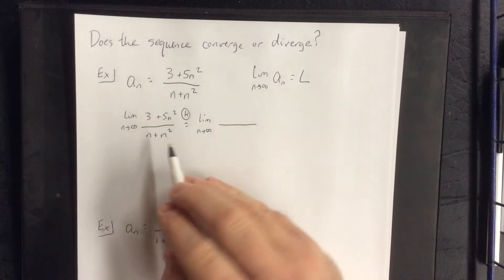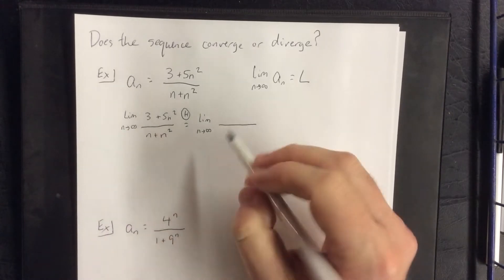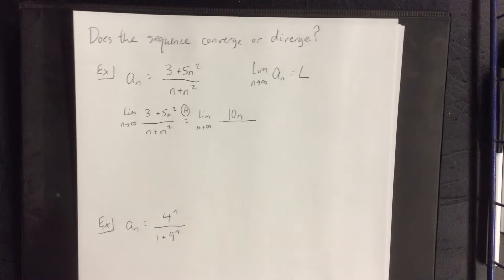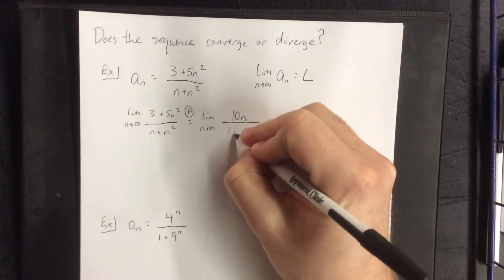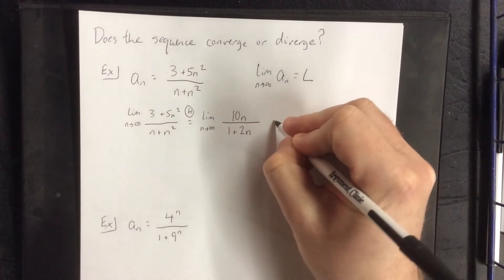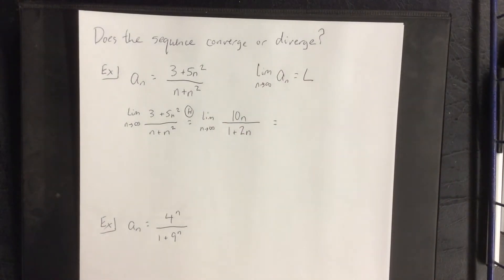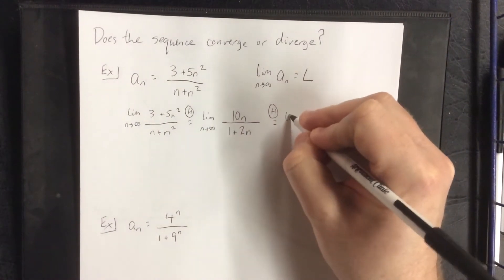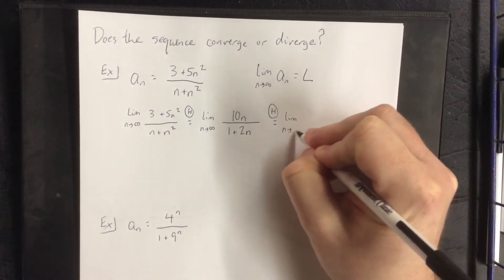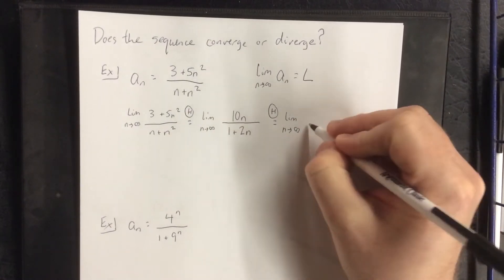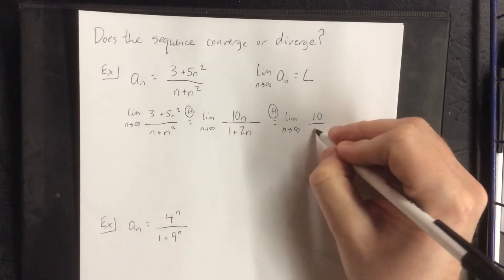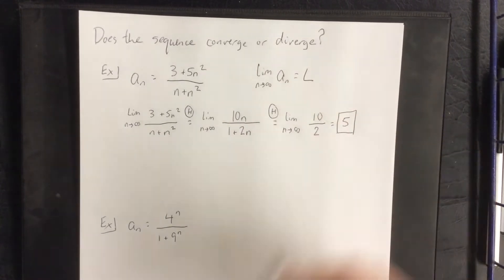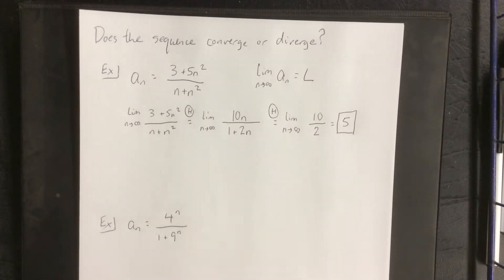Differentiating the top with respect to n, the constant goes away and we get 5 times 2n, which is 10n. In the denominator, we get 1 + 2n. As n goes to infinity, we still get the form infinity over infinity. So applying L'Hôpital's rule once again, 10n becomes 10 and 1 + 2n becomes 2. That gives us 10/2, which is 5.